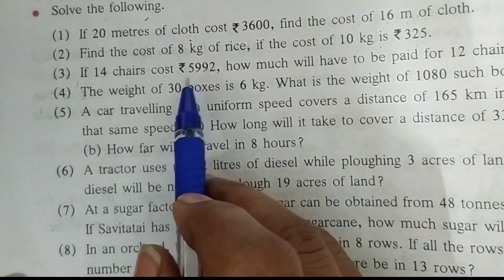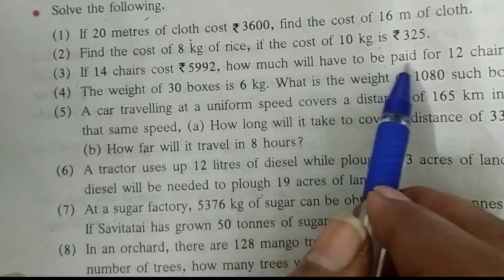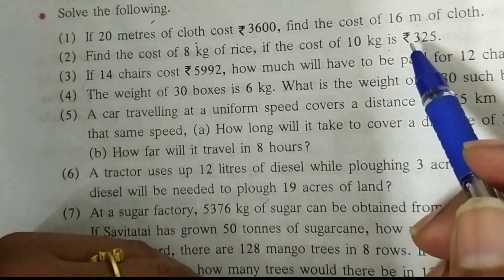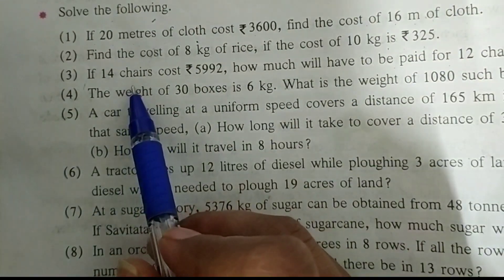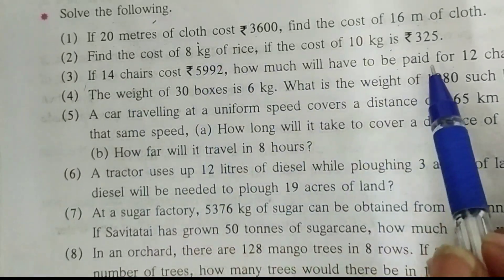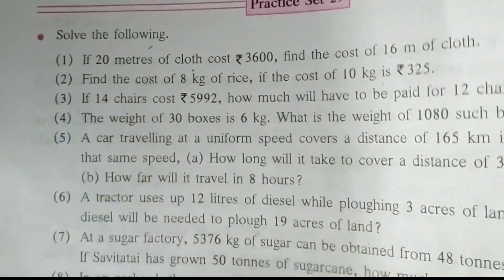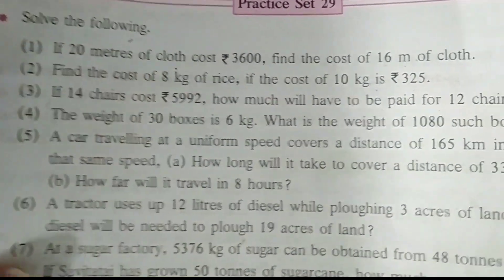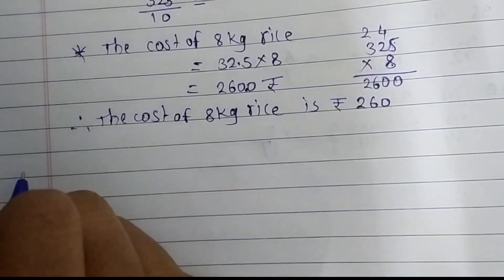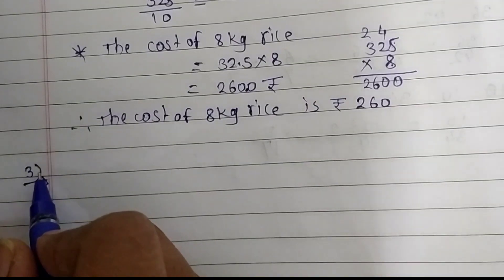Now let's look at the third question. If 14 chairs cost rupees 5992, how much will have to be paid for 12 chairs? Here first of all we are going to find the cost of 1 chair and then find the cost of 12 chairs. Write the questions from your book and then write the answers in your notebook.